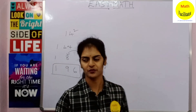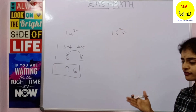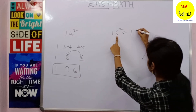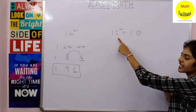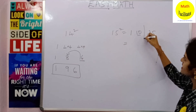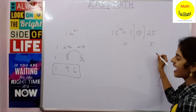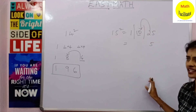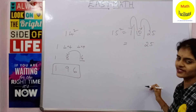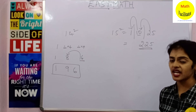You can do the same thing in a single step. For 15²: write 1, then 5 + 5 = 10, then 5 × 5 = 25. Now balance these numbers: write 5 first, add the 2 to the 0 giving 2, then add that 1 to the leading 1 giving 2. So 15² = 225.